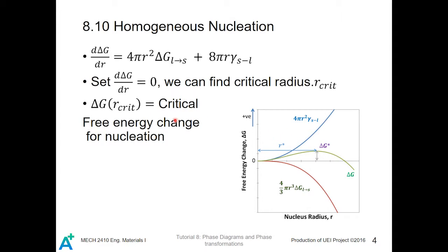The critical R-value is given by the expression here. If we substitute this critical R-value into the expression for free energy change, we get the critical free energy change for nucleation — the minimum energy we need to first input into the system for it to start nucleating by itself, which is described by the vertical line shown here.